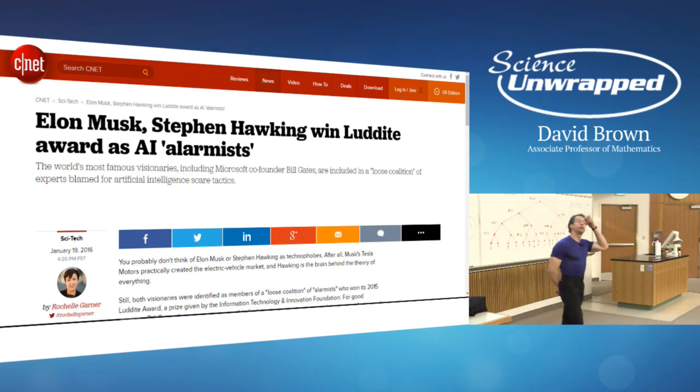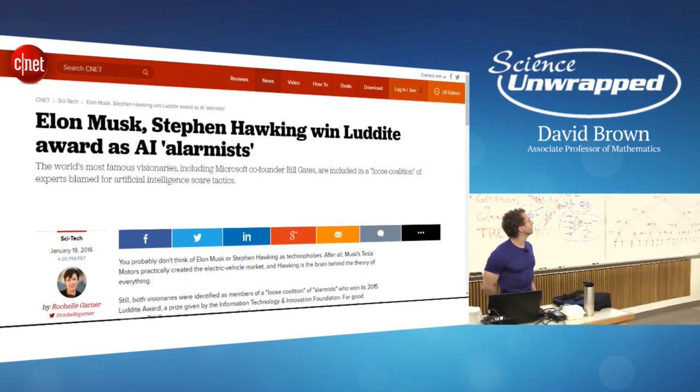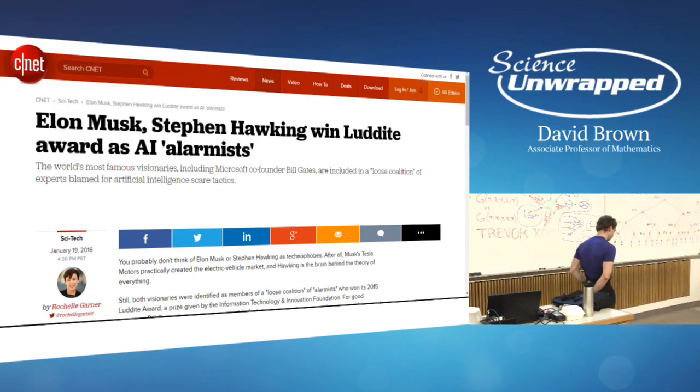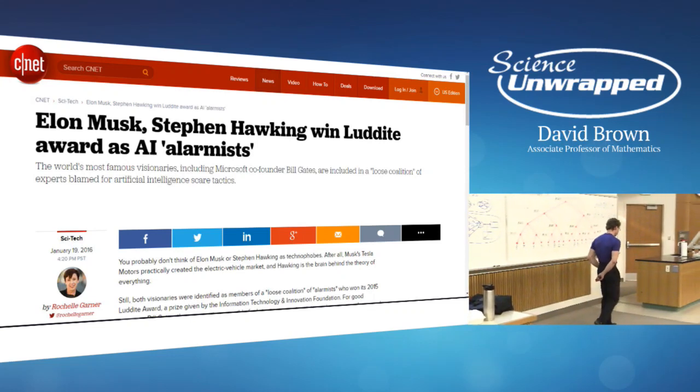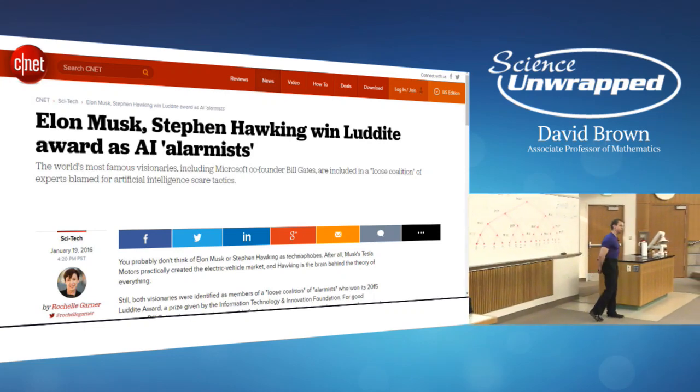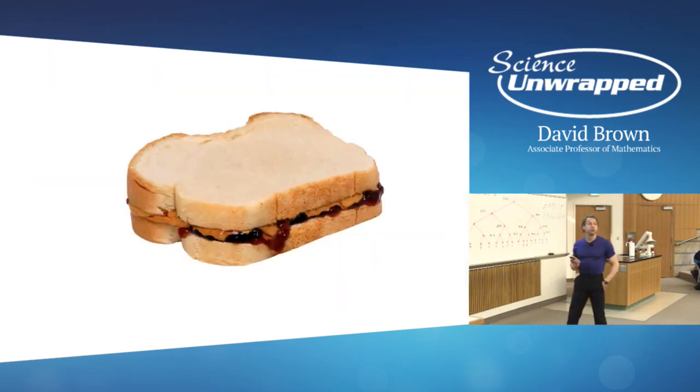Do you know what a Luddite is? Hal, are you there? Yes, Dave. I'm here. Could you tell us what a Luddite is, please? Certainly. One of a group of early 19th century English workmen destroying labor-saving machinery as a protest. Thanks, Hal. That was informative. Workers destroying labor-saving machinery.